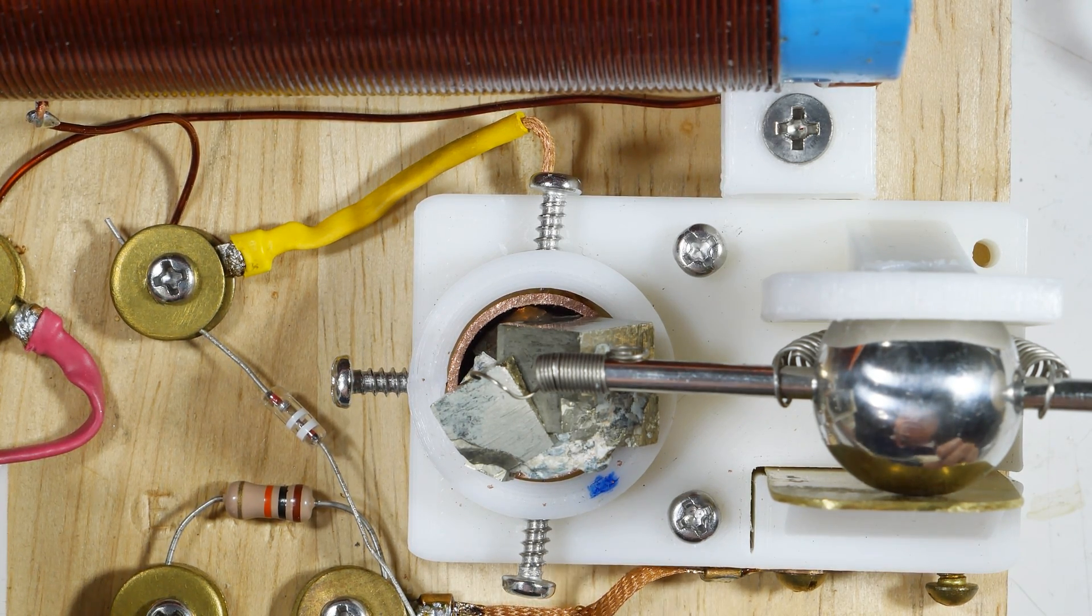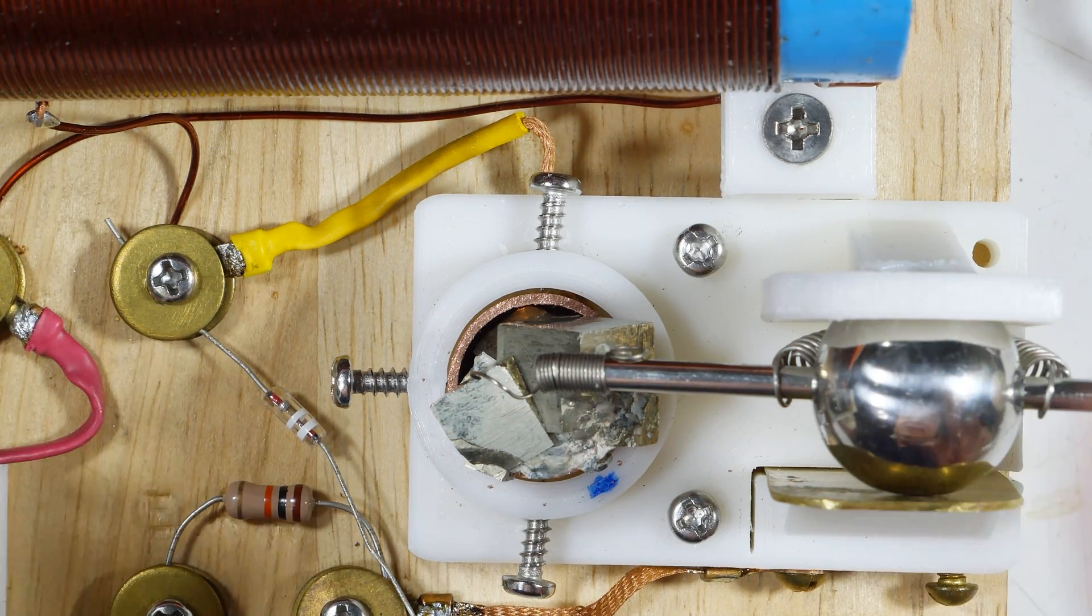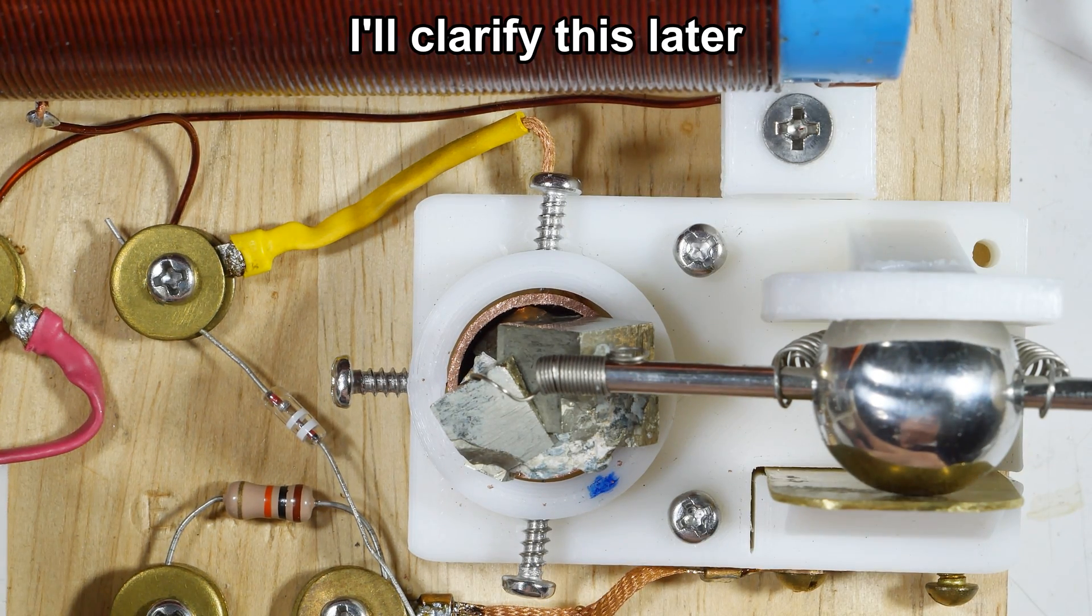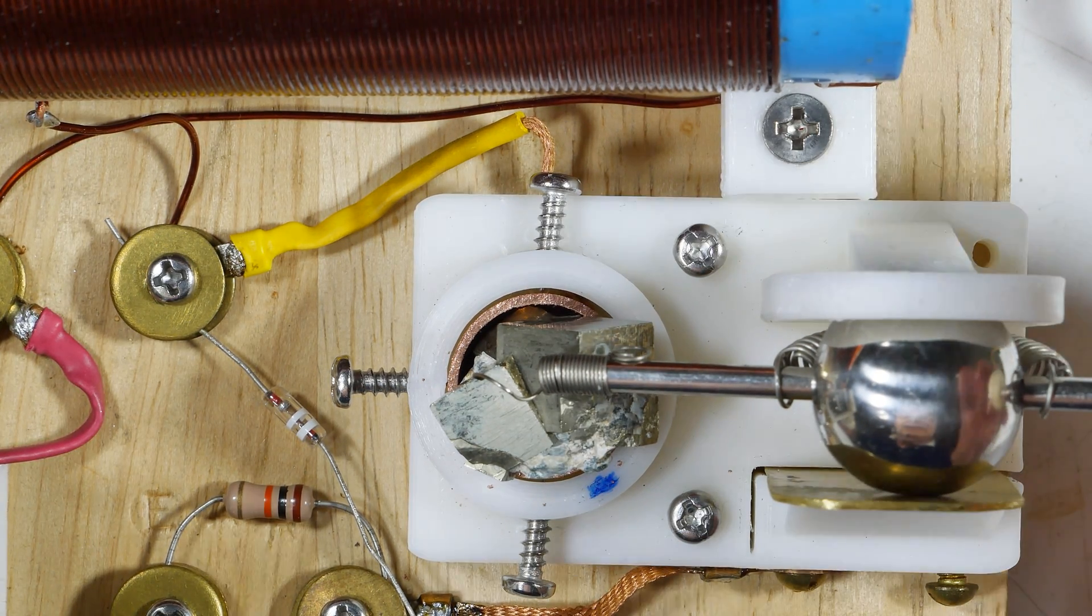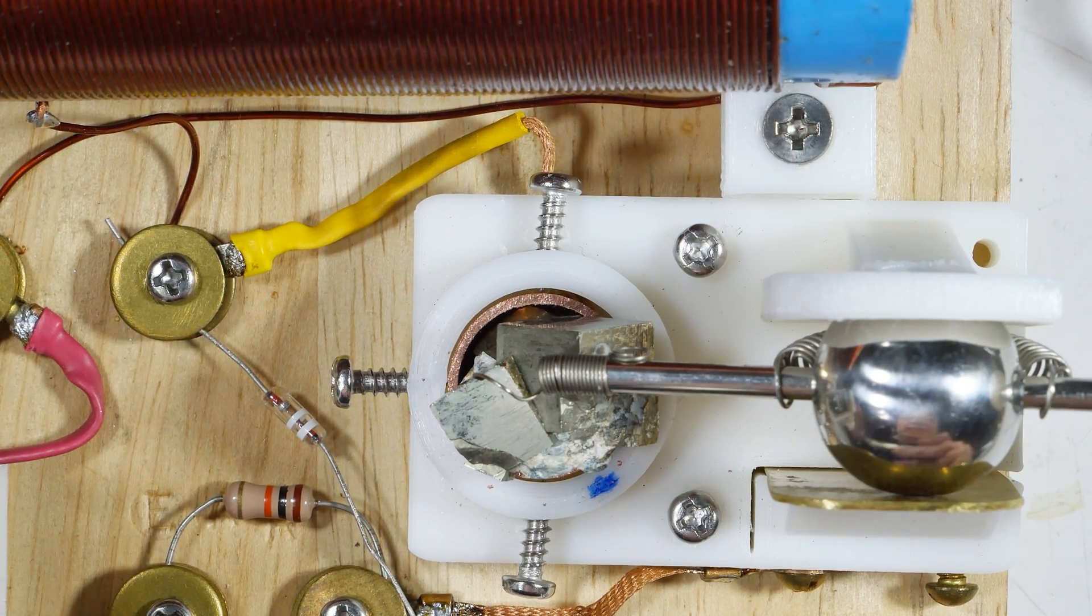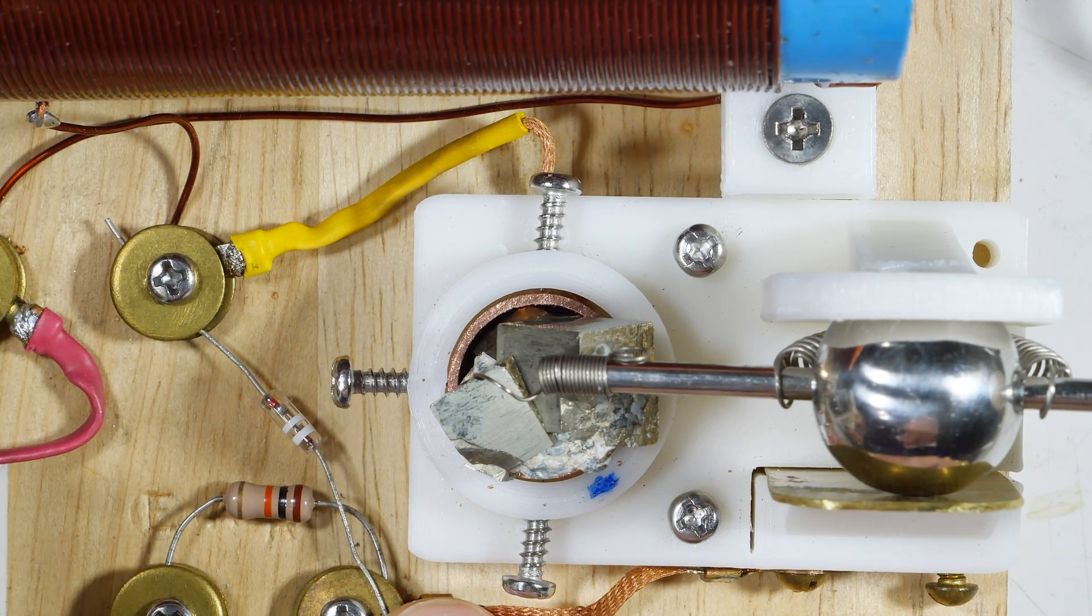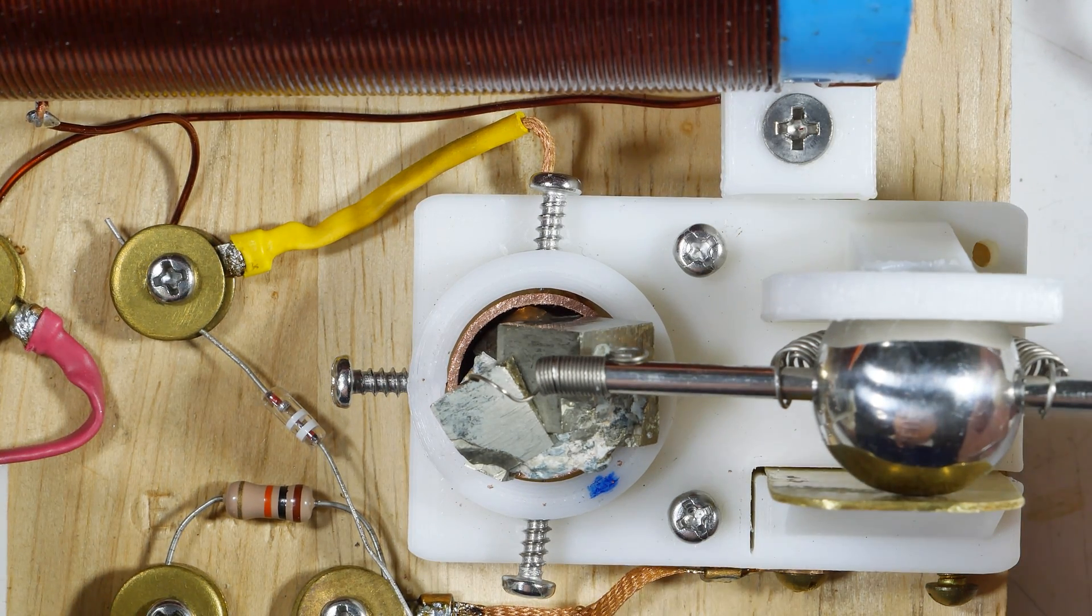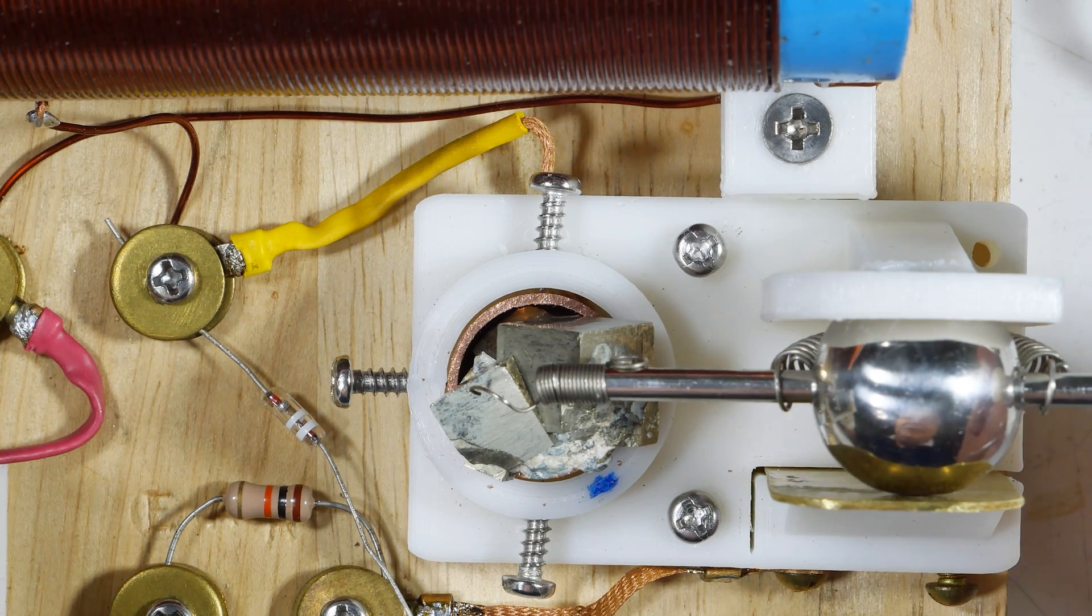There's kind of a dirty secret about using a cat whisker. In order to find a hot spot on the cat whisker, you have to be tuned to a station. But in order to tune to a station, you have to be on a hot spot on the cat whisker. So what a lot of people do is they'll leave a diode in place, and then you just kind of reach over here and touch it to find the station, and then you release it. Once you're on the station, then you can look for your hot spot on your crystal.